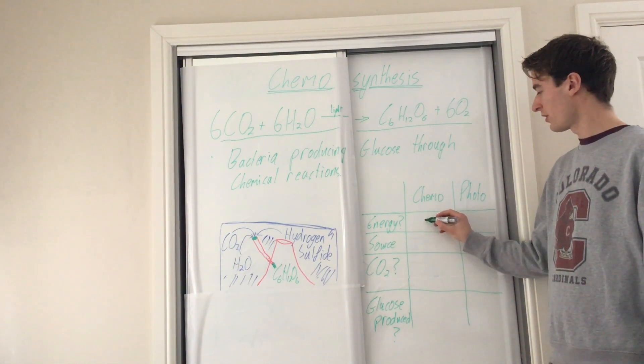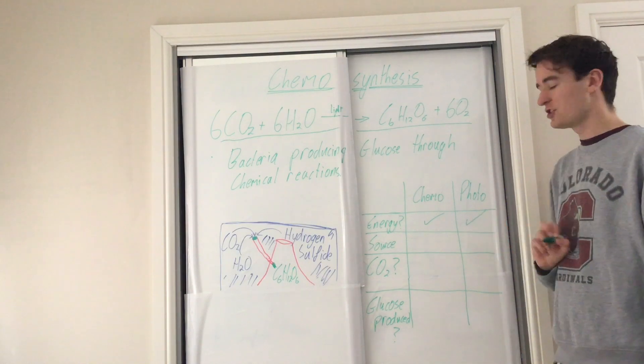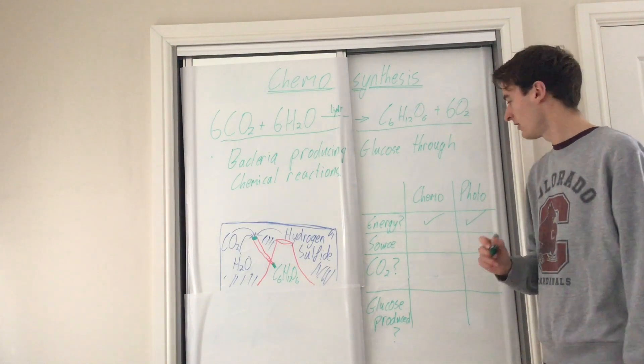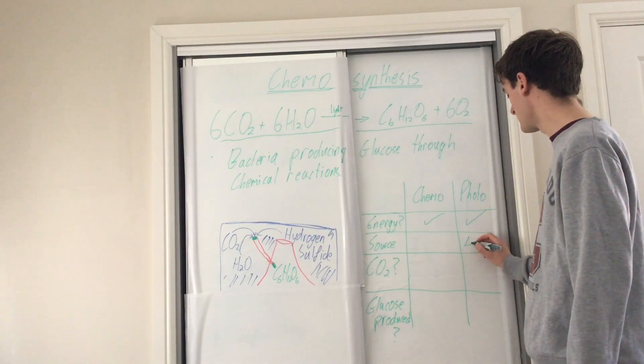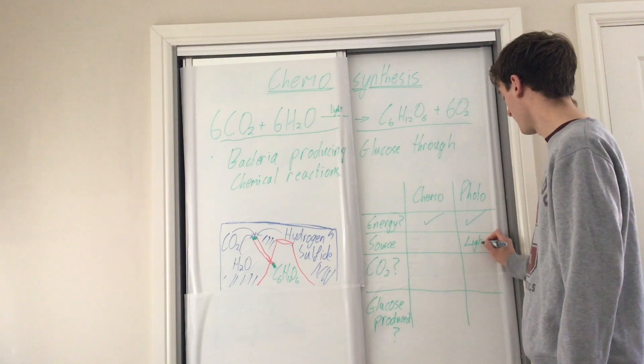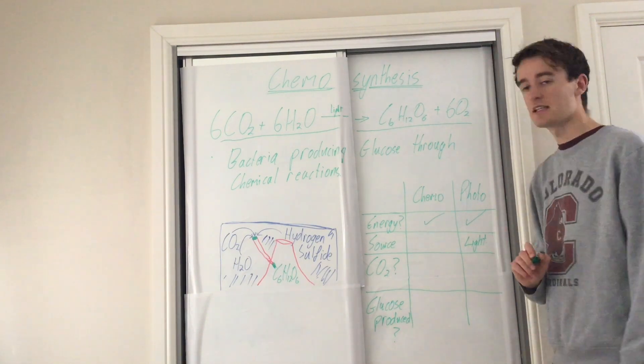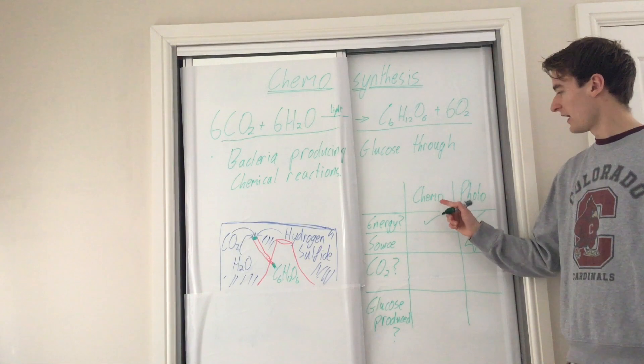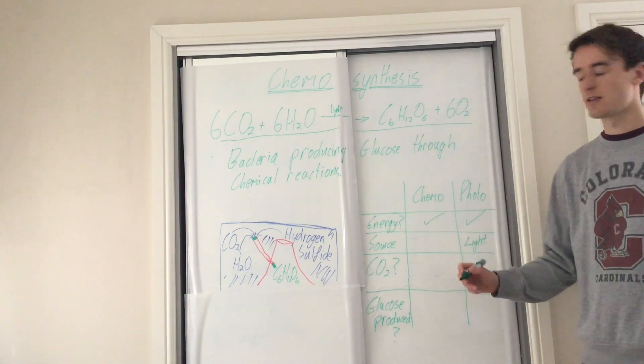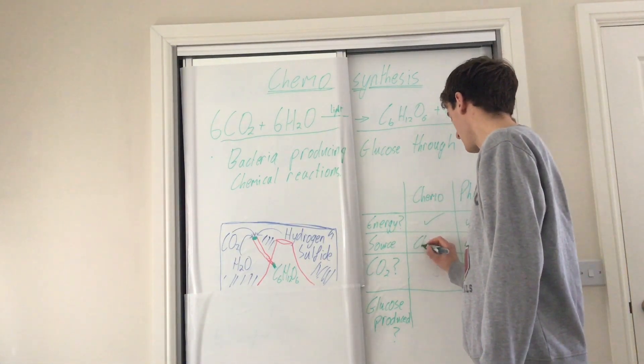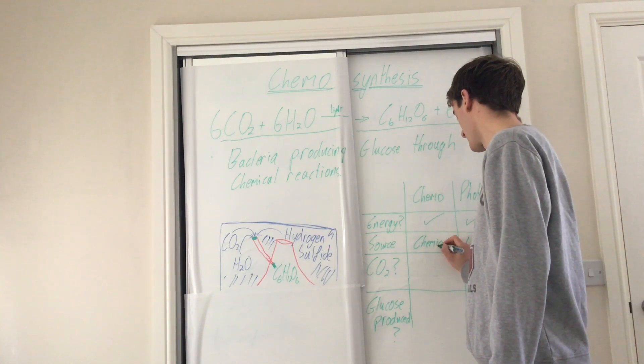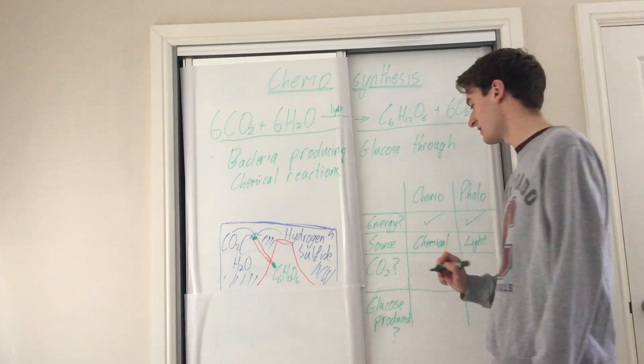So both of them do require energy to be made. However, the source of the photosynthesis, as the name photo would suggest, is light. The energy source for chemosynthesis, we're looking at chemical reactions. That's a chemical energy source.